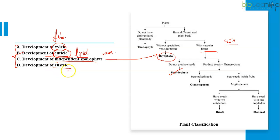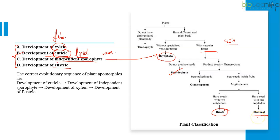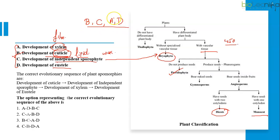And then, development of eustele, which is the characteristic of dicots and not of monocots, pteridophytes or bryophytes. If we arrange all these four apomorphies in correct evolutionary sequence from oldest to the newest, then it will be development of cuticle, that is B, then development of independent sporophyte, that is C, development of xylem, which is A, and development of eustele, which is D. According to the given options, the answer is option 3, as BCAD sequence is only given in option 3, and therefore is the answer.